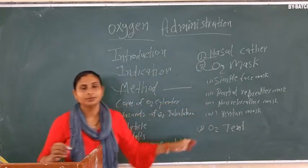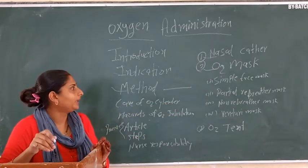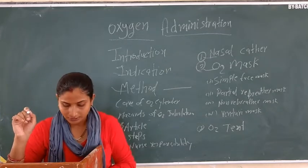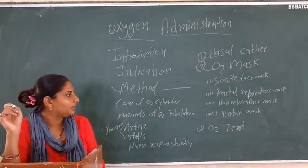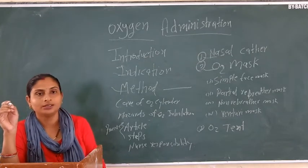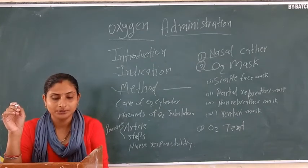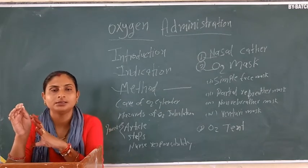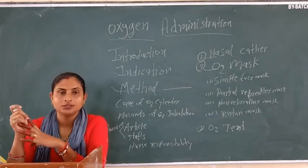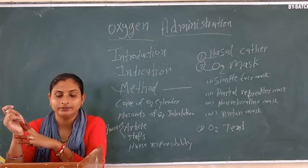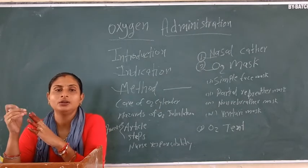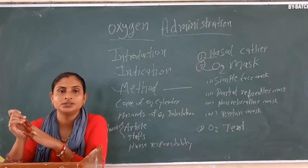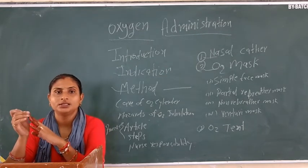By mask, examples include a simple face mask, partial rebreather mask, and non-rebreather mask. The simple face mask is placed over the face. The flow rate is 5–7 liters per minute, and oxygen delivery concentration is 40–60%.